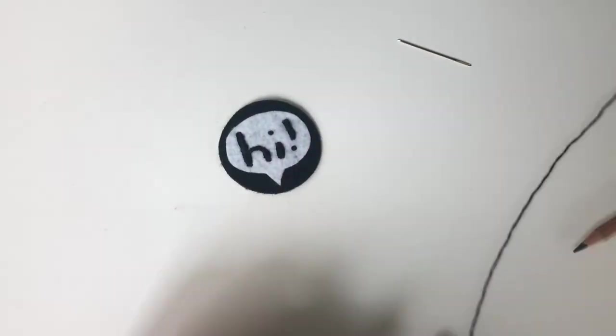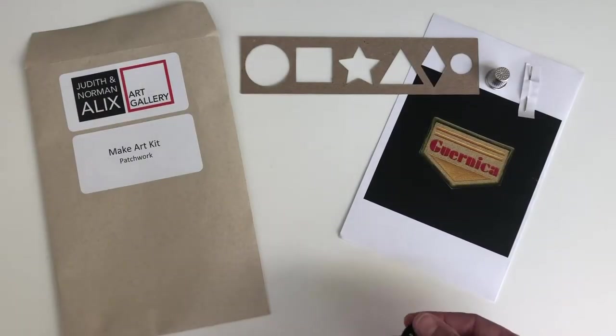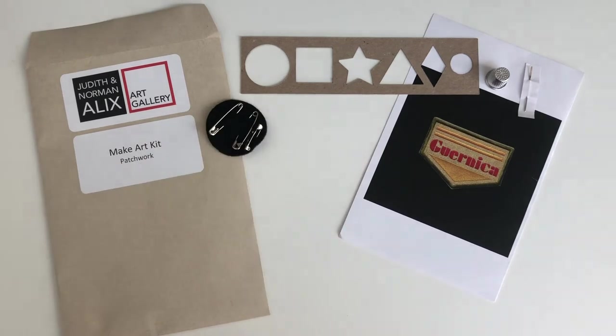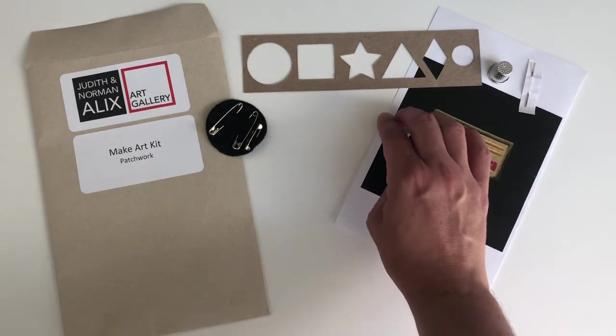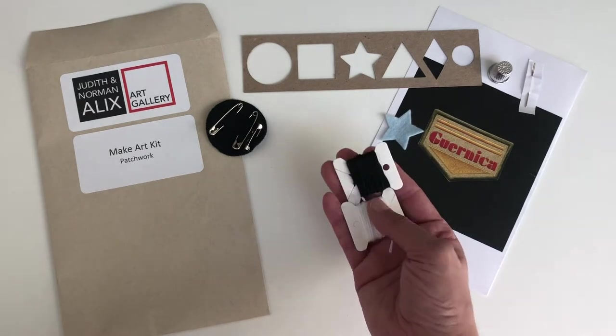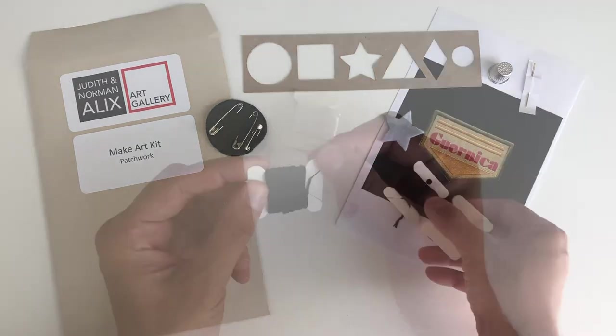We have included an embroidery needle, a thimble, a stencil, some safety pins and a pin back, a few pieces of felt that have already been cut into shapes for you to use, and some black and white embroidery thread.